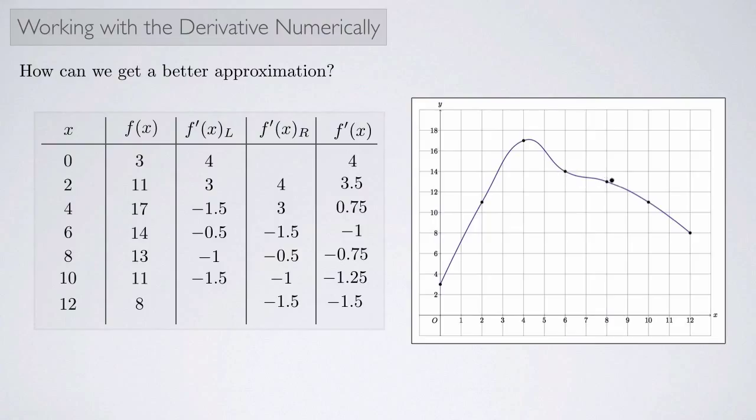Then negative 1.25. You can see that by taking left endpoints and right endpoints and taking the average of those, you get the best approximation for the derivative numerically.